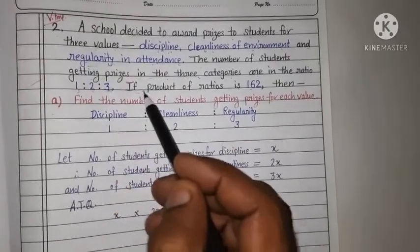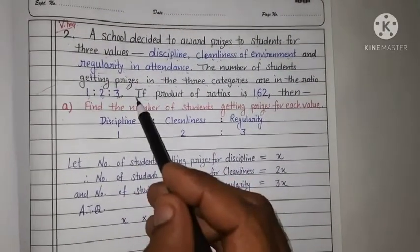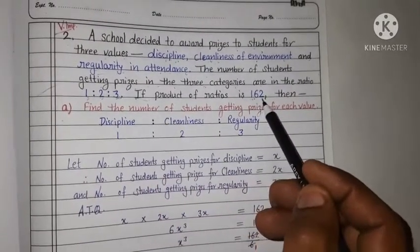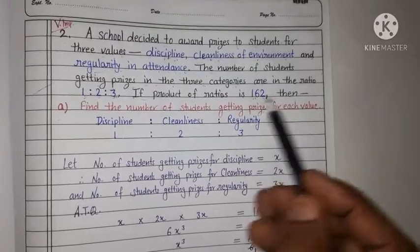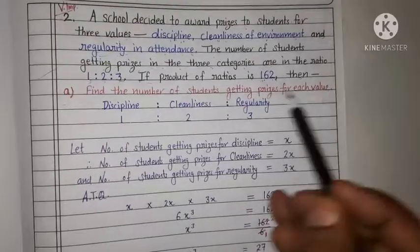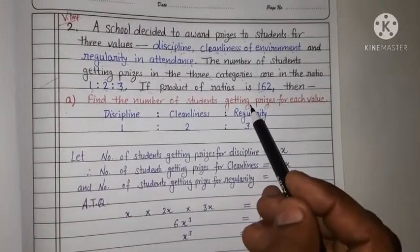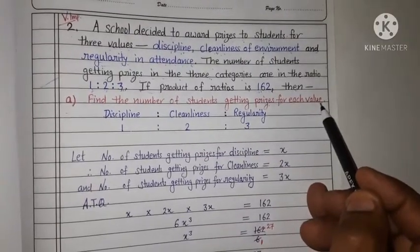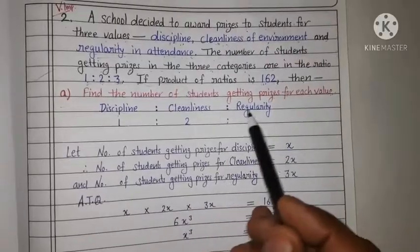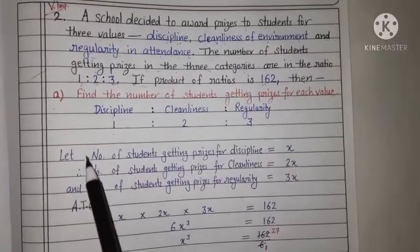The product of students for each value is 162. So we write discipline ratio cleanliness ratio regularity. Woh hamein given hai 1 ratio 2 ratio 3.